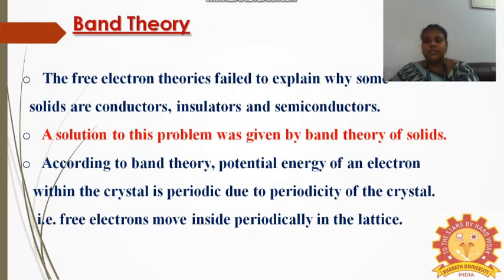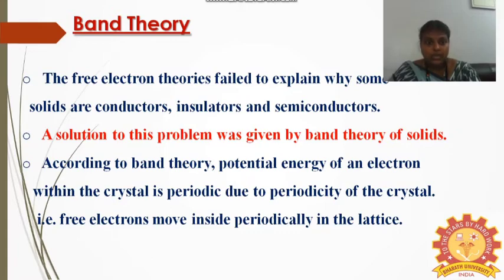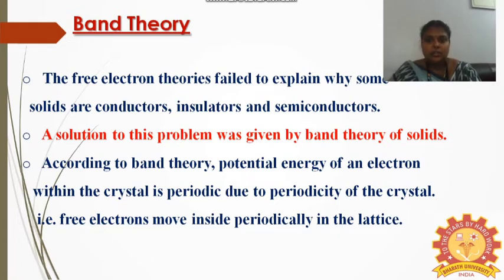Next is the Band Theory. From the quantum theory, it is difficult to differentiate materials into conductors, semiconductors, insulators, etc. To overcome that problem, the Band Theory arose. This Band Theory was proposed by the scientist Bloch in the same year as the Quantum Free Electron Theory. According to Band Theory — also called Zone Theory — the materials can be very easily classified based on the concept of energy gap. Based on this energy gap, we can very easily categorize materials into conductors, insulators, and semiconductors.